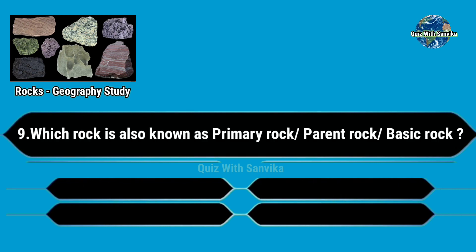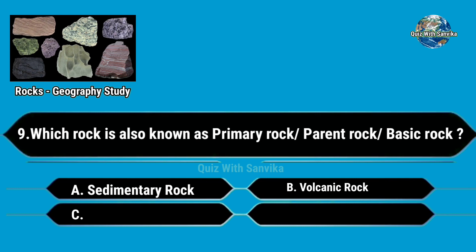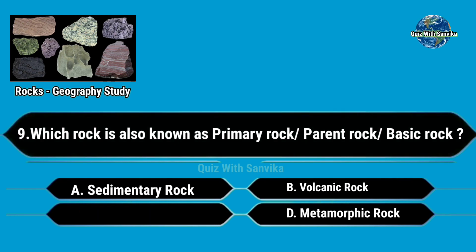Which rock is also known as primary rock or parent rock or basic rock? Options are A. Sedimentary rock, B. Volcanic rock, C. Igneous rock, and D. Metamorphic rock. Answer is C. Igneous rock.